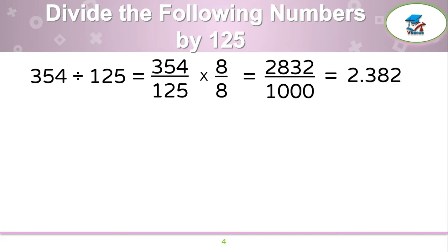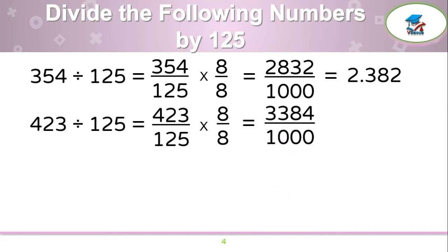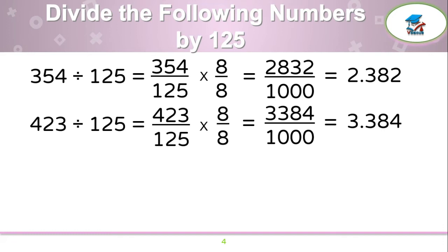Your answer will become 2.832. Let us take one more example: 423 by 125. Write 423 over 125, which should be multiplied by 8 over 8. 423 times 8 is 3,384, and 125 times 8 is 1,000. Your answer will become 3.384.